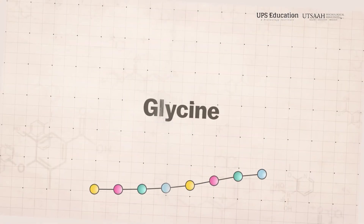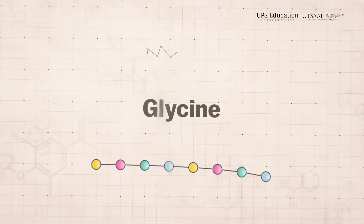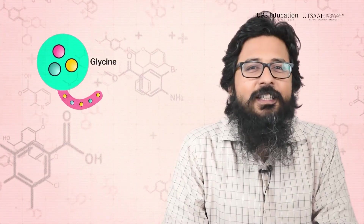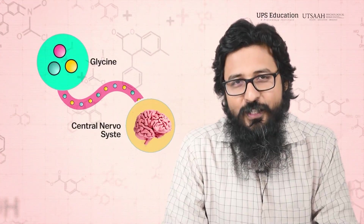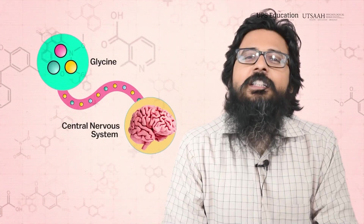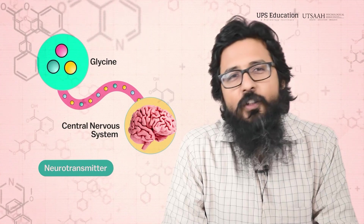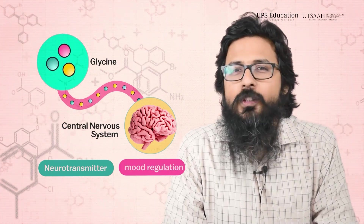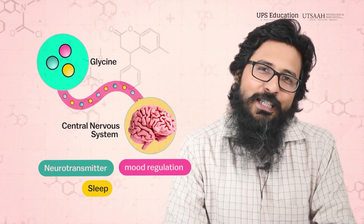Fifth: glycine. Glycine is an amino acid with inhibitory effects in the central nervous system. It is involved in neurotransmission and may play a role in mood regulation and sleep.